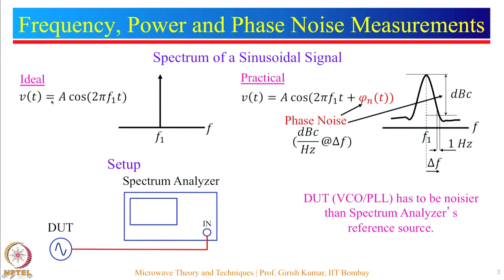For a sinusoidally varying signal V(t) = A cos(2πf₁t), ideally the spectrum looks like an impulse at frequency f₁ with height A. But practically the impulse is flared at the bottom mainly because of phase noise present in the signal. This phase noise is measured in dBc per hertz at some delta-f offset from the center frequency f₁.